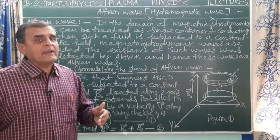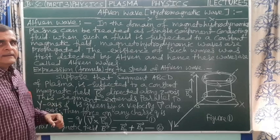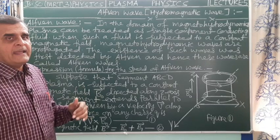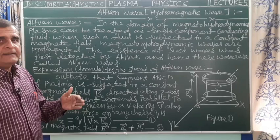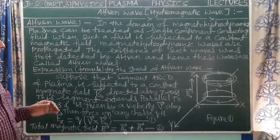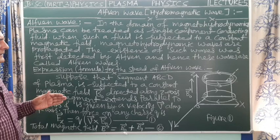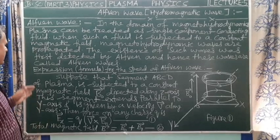In magnetohydrodynamics, plasma can be treated as a single-component conducting fluid. When such a fluid, that is plasma, is subjected to a constant and uniform magnetic field, magnetohydrodynamic waves or Alfvén waves are propagated. Such waves were first detected by Alfvén, and hence these waves are called Alfvén waves.